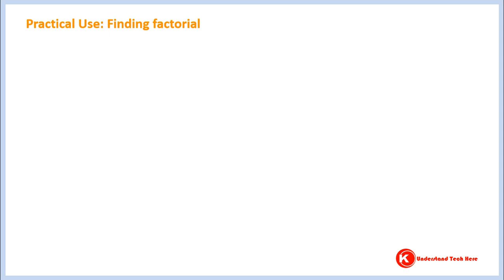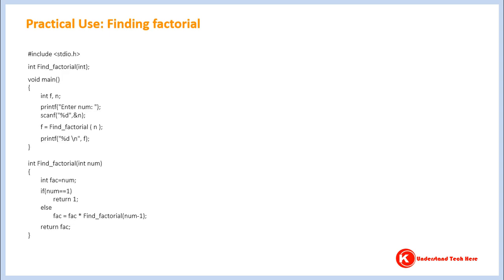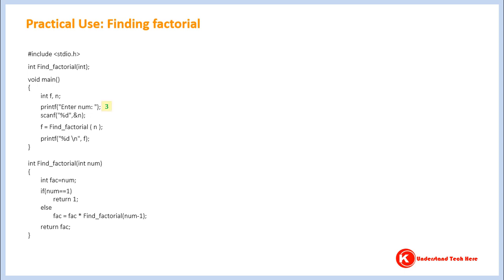There are places where recursive functions can be useful. To see one such use, let's look at how factorial can be found using a recursive function. When prompted, we enter three. After getting data from the user, the computer comes to a function call, so from this point computer goes to the function definition, and the value of variable n, which is three, is passed.